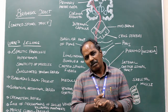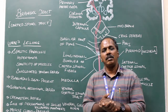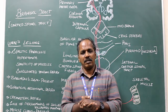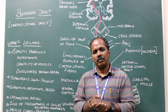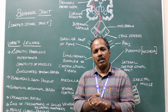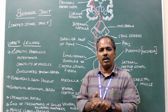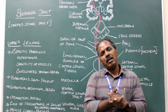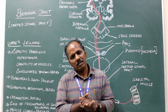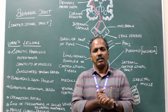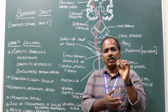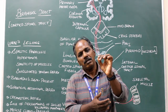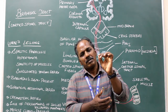The upper motor neuron lies in the cerebral cortex. The lower motor neurons are motor nuclei of the cranial nerves and motor neurons present in the anterior horn cells of the spinal cord.